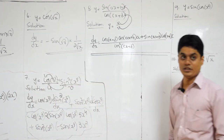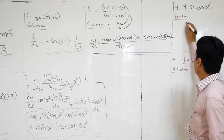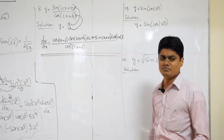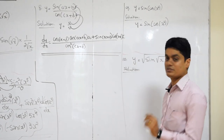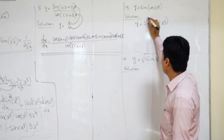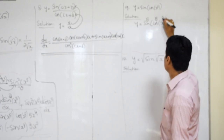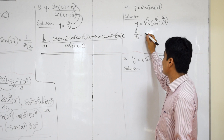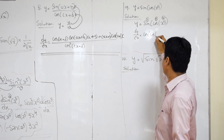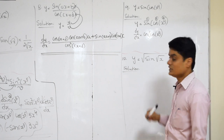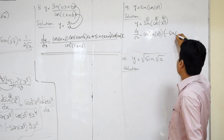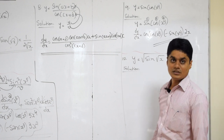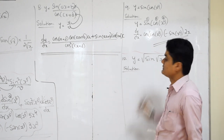Next question — last two problems from chain rule. Y is equal to sin of cos of X squared. It is a very basic problem. Just count how many functions are combined: 1, 2, 3. DY by DX is equal to: what is the derivative of sin? Cos — remaining thing write as it is. Then derivative of cos: minus sin of X squared. Then derivative of X squared: 2X. Simple — after solving all these problems, this is nothing.